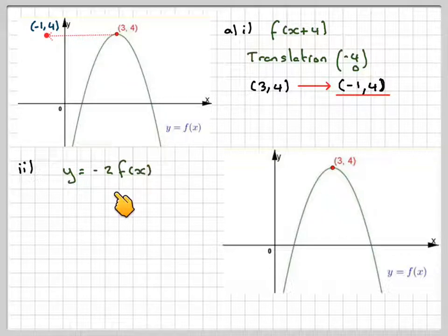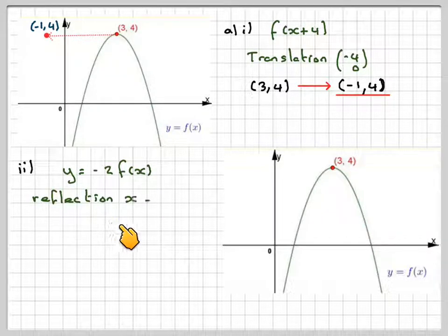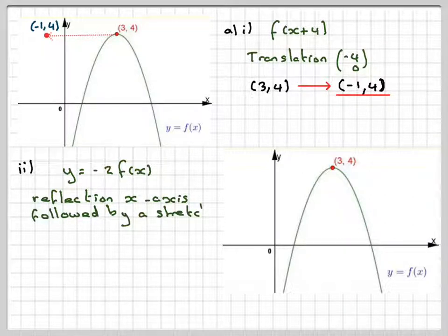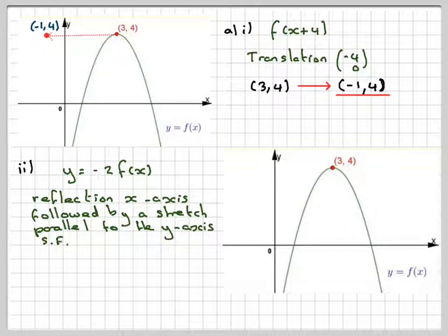Part b: y equals minus 2f of x. This equates to a reflection in the x-axis, so (3, 4) will go down to (3, -4). And then it is stretched parallel to the y-axis, scale factor 2. So if it is at (3, -4), then the maximum will now go down to (3, -8).